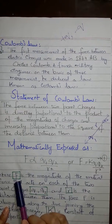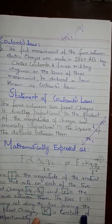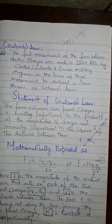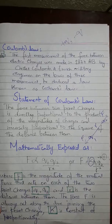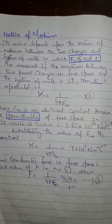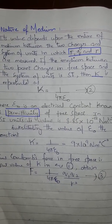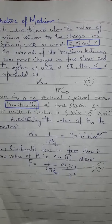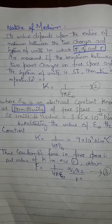The mathematical form is: F is directly proportional to q1·q2 / r². Removing the proportionality sign, we use constant k, so F = k·q1·q2 / r². Here F is the magnitude of the mutual force acting on each of the two point charges q1 and q2, r is the distance between them, and this force F always acts along the line joining the two point charges.